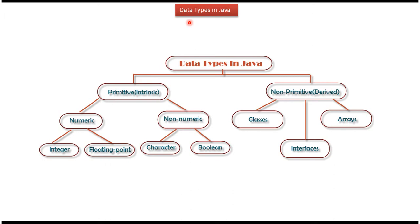Hi, in this video tutorial I will cover Data Types in Java. In Java, data types are divided into two categories. The first one is primitive data type and the second one is non-primitive data type.